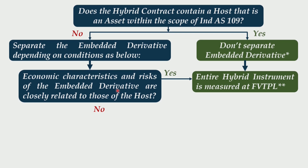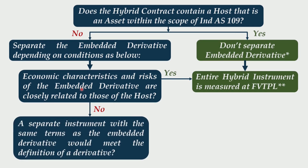Recall the three conditions A, B, and C — between B and C the word 'and' was given, meaning all three conditions need to be fulfilled. So if the answer to condition A is no, only then you step into the second condition. The second condition is: a separate instrument with the same terms as the embedded derivative would meet the definition of a derivative. That means, whatever you are trying to separate as an embedded derivative from the host contract, its accounting can be done only when that embedded derivative individually qualifies the definition of a derivative. If the answer to this question is no, you cannot account for that derivative separately and the entire hybrid instrument is measured at FVTPL. If the answer is yes, then and only then you can account for that embedded derivative separately.